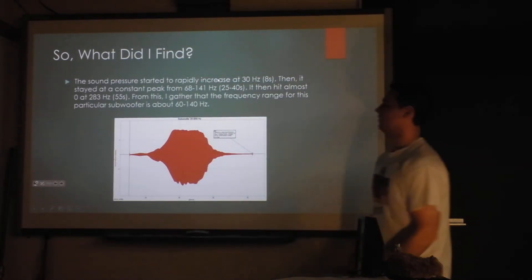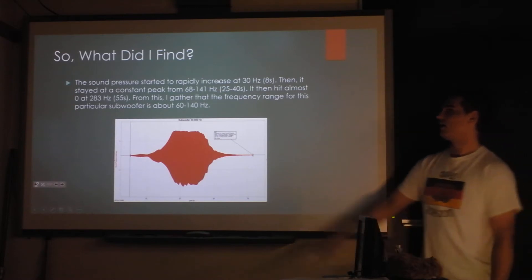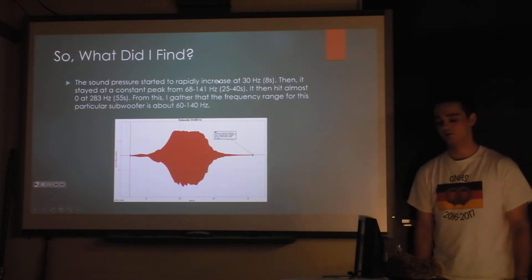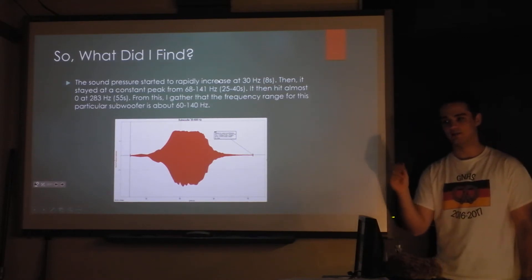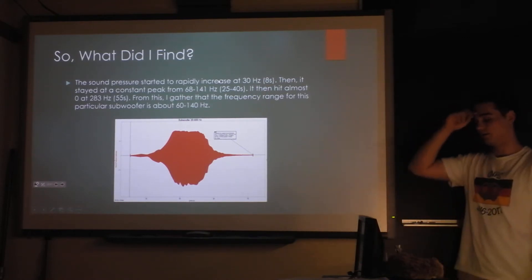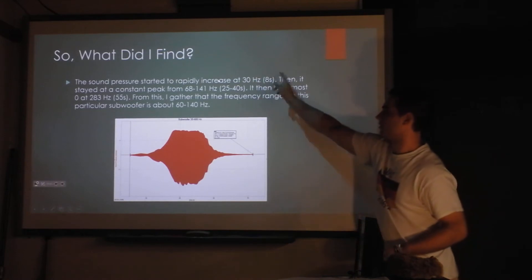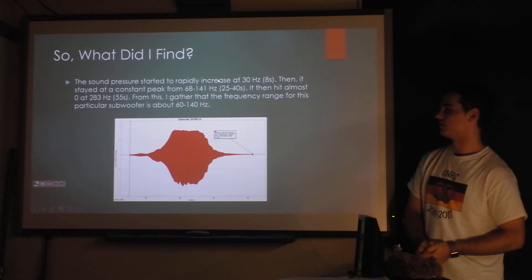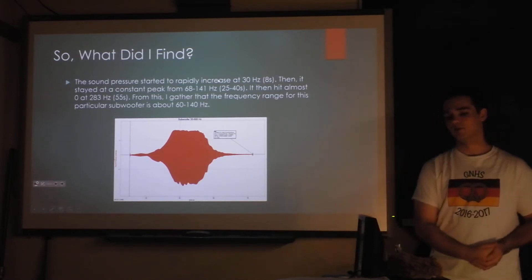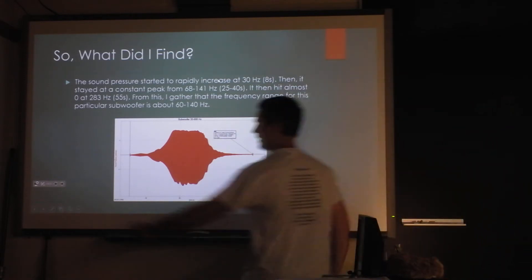Okay, so what I found: sound pressure started to rapidly increase at 30 hertz. I kind of already explained this. It's a constant peak, and then dropped. And the way I found these exact frequencies was I actually went back to the video and I stopped it at specific times to find what that frequency was. It wasn't very difficult at all. So that's where I'm getting these 30 hertz, 68 through 141, 0 to 283, using the time from that video and what the screen displayed as the hertz being played.